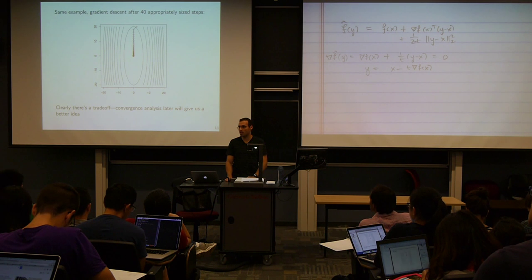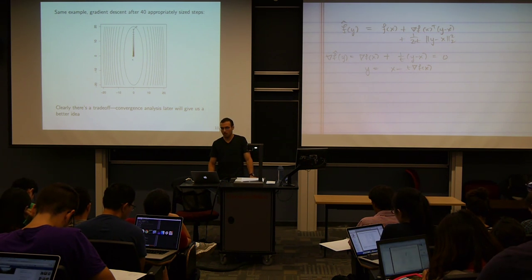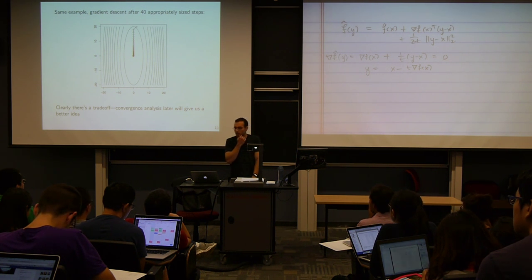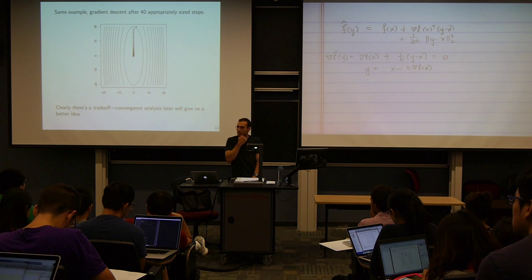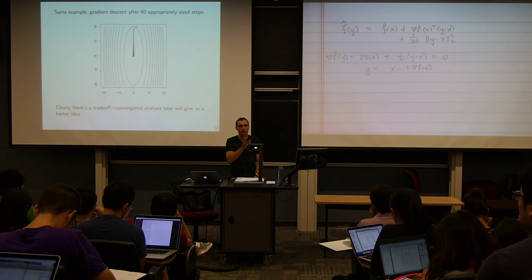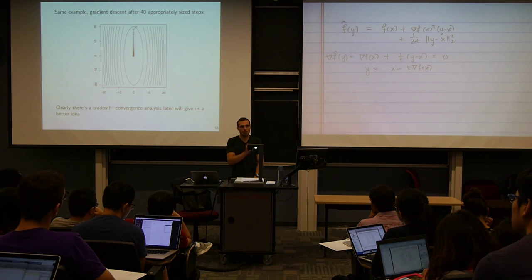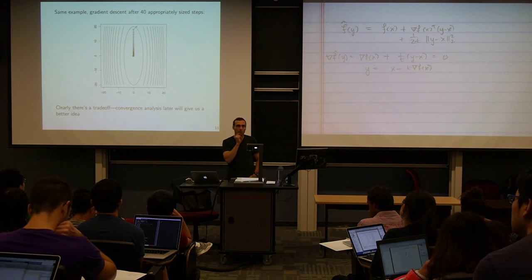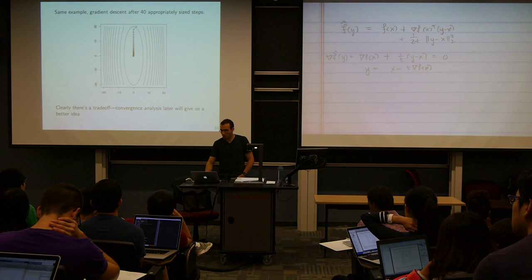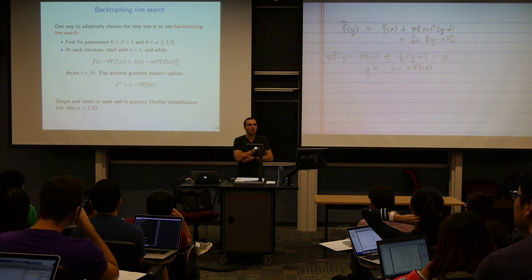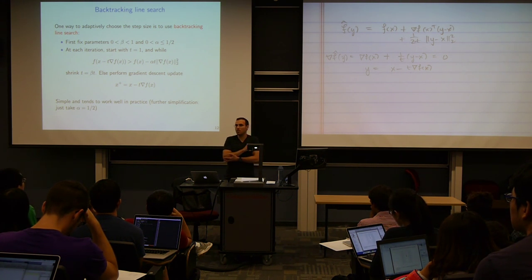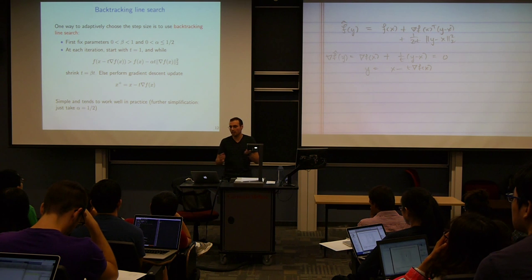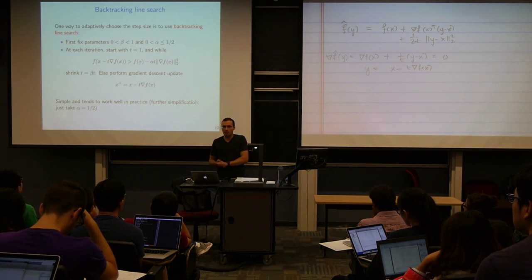There's clearly a trade-off in choosing t too big or too small. The convergence analysis will give us an idea of the right step size — one over the Lipschitz constant — but we don't always know that or it may be hard to compute. So typically we don't use fixed step sizes in practice; instead we use something called backtracking line search, which chooses a step size adaptively at each iteration to make the most progress possible.